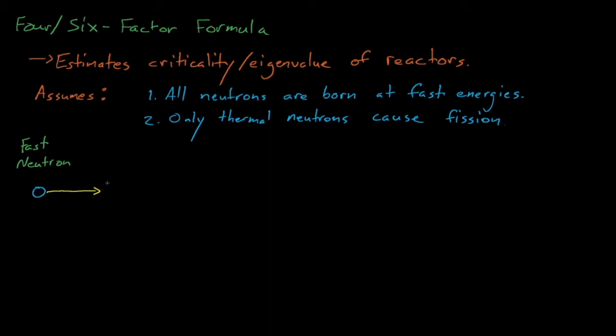We'll also assume that only thermal neutrons can cause fission events. Thermal neutron cross-sections are significantly higher than fast neutron cross-sections, but fast neutrons do cause some non-negligible number of fissions in reactors. We'll define a correction factor later that will account for this slightly incorrect assumption.